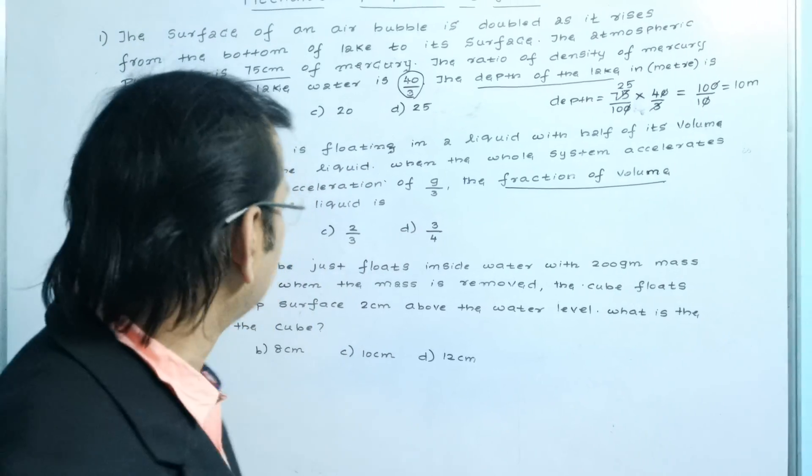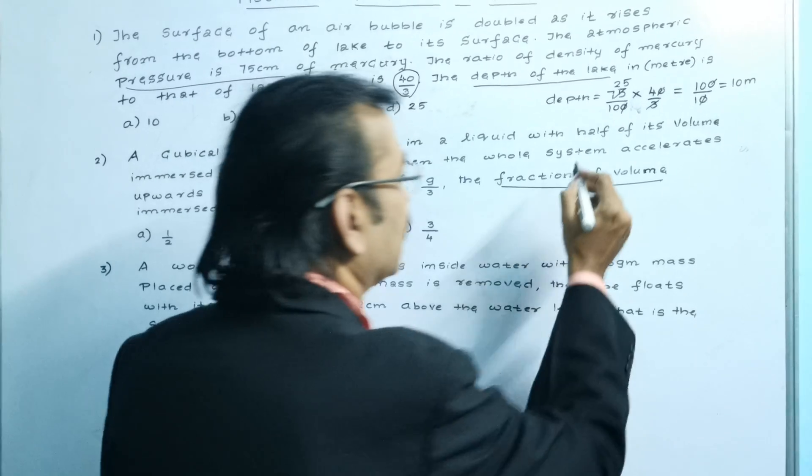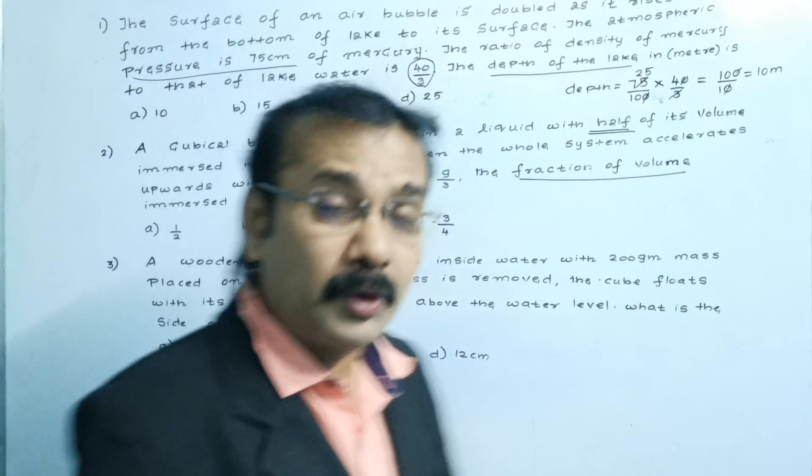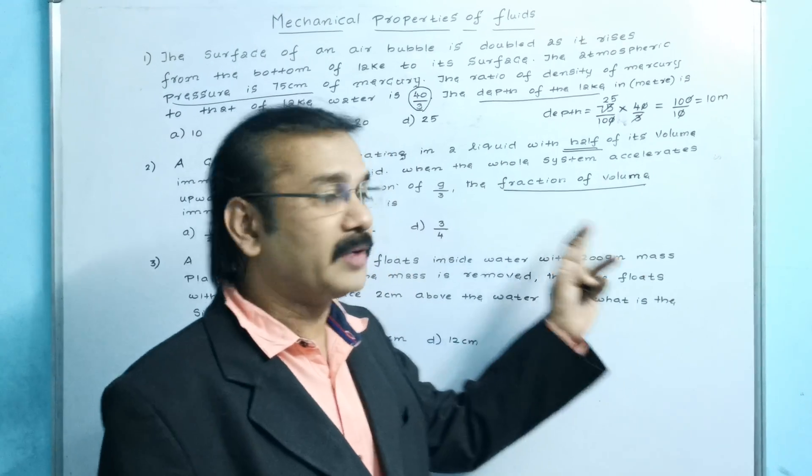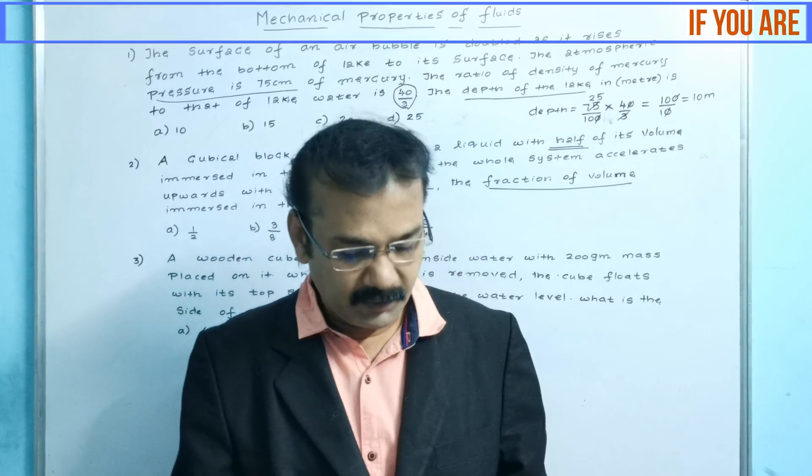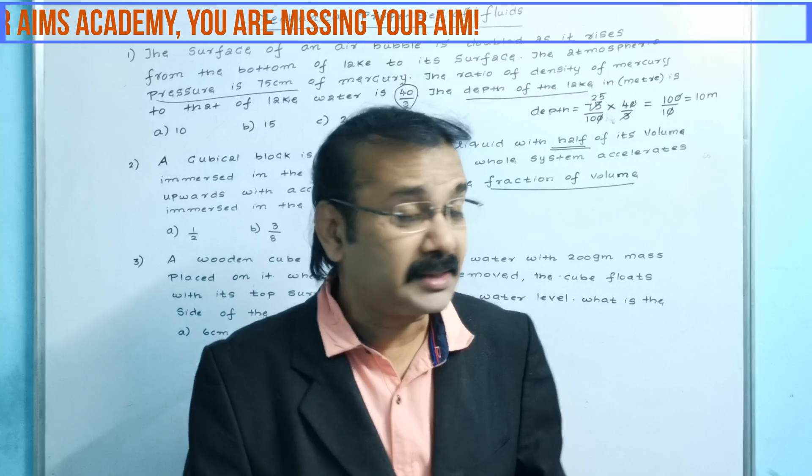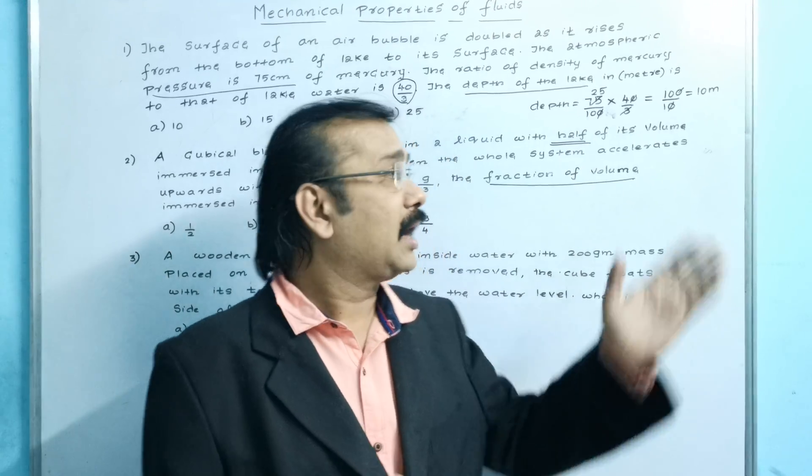This question is very simple. See that model here - he has asked to find the fraction of volume. That is an important point to be noted. He has given 4 options, and the other important clue is he has given 'half'. So without using any concept and without using any formula, he has asked to find the fraction of volume.